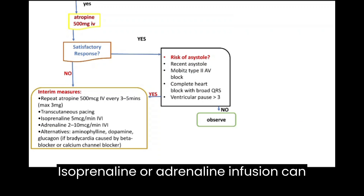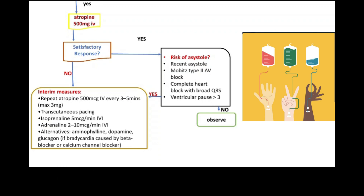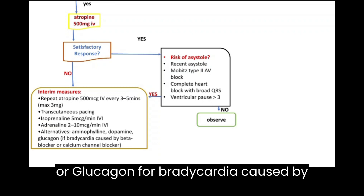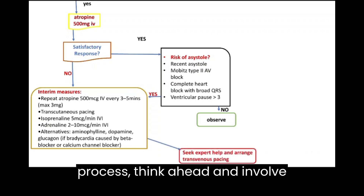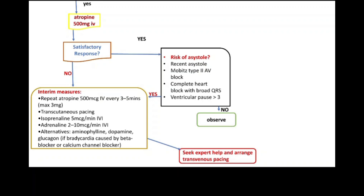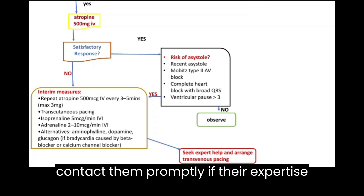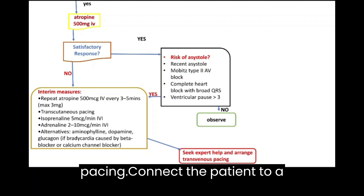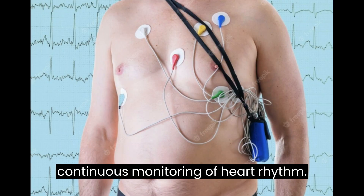Other medications like isoprenaline or adrenaline infusion can also be considered. Alternative options include aminophylline, dopamine, or glucagon for bradycardia caused by beta blockers or calcium channel blockers. Throughout the management process, think ahead and involve specialists. Anticipate the need for an anesthetist or cardiologist and contact them promptly if their expertise is required for sedation or transvenous pacing. Connect the patient to a cardiac monitor or telemetry system for continuous monitoring of heart rhythm.